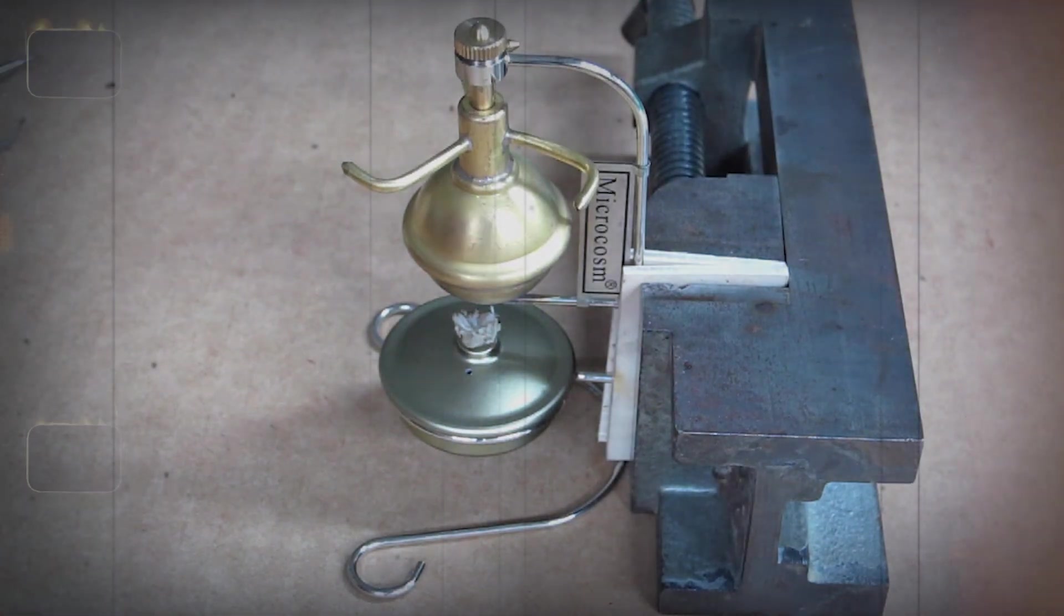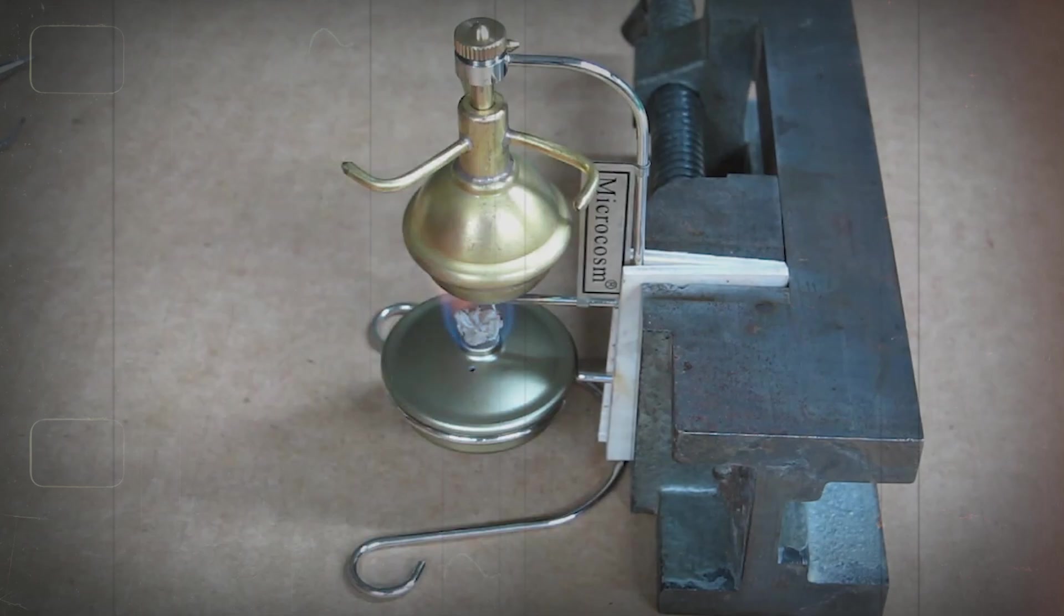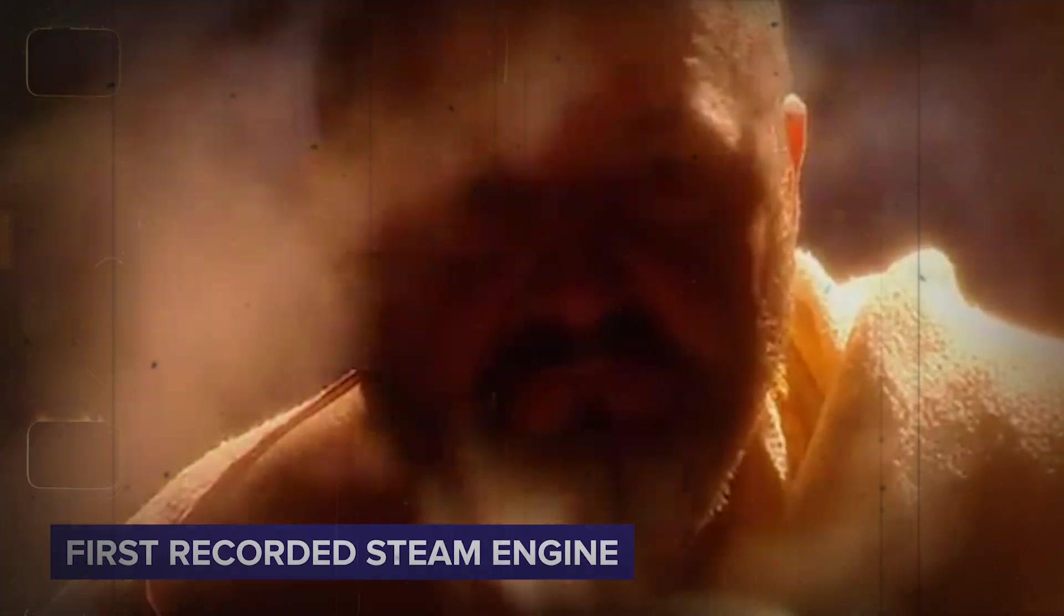A type of steam machine that was the first to create rotary motion. While it didn't lead to practical applications in its time, Hero's Aeolipile is often regarded as the world's first recorded steam engine.